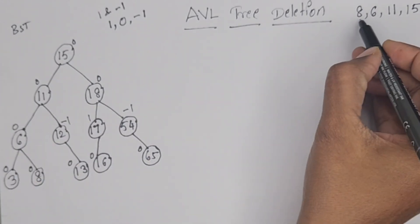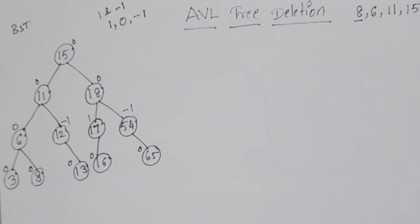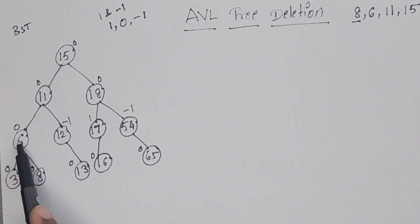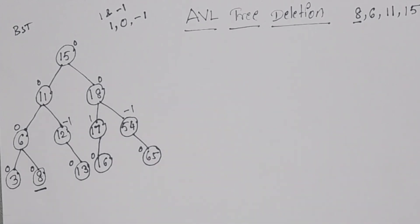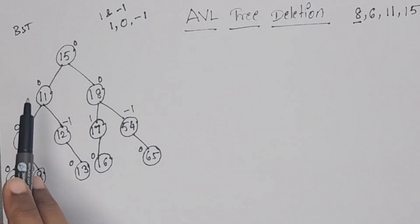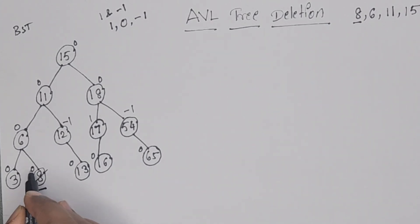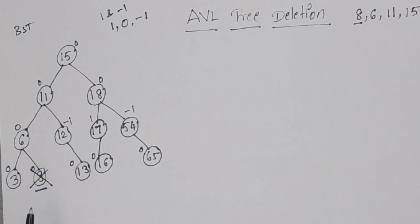Now I am going to delete elements one by one. The first element is 8. First of all, you have to search for it: it is less than 15, less than 11, and greater than 6. Like this, we have to find out where 8 is. After finding 8, I am going to remove it. Since 8 is a leaf node with no children, we can directly remove it.